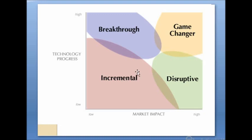If we talk about the game changer, technology progress is very high and market impact is also very high — both are at their peak. Like the smartphone. The smartphone is a game changer. Technology is new and market impact is very high. After the launch of smartphones, Nokia — the company that was producing the highest number of mobile phones at that time — disappeared from the market. This is game changer innovation: high technology progress and high market impact.